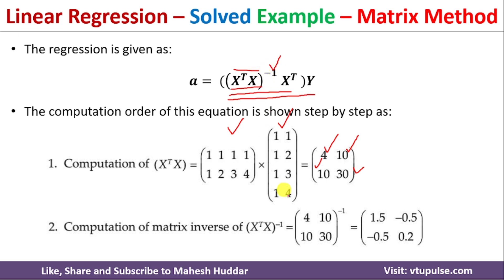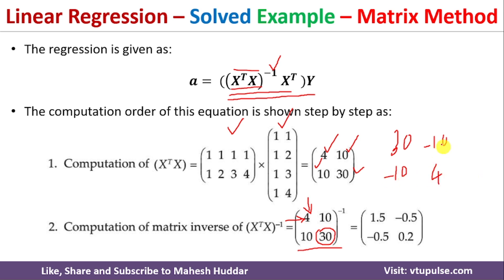Next we calculate the inverse of this matrix. To compute the inverse, we first calculate the cofactor matrix. For the first element, removing its row and column leaves 30. For the second element, removing its row and column leaves 10. With the plus-minus sign pattern, the cofactor matrix is [[30, -10], [-10, 4]]. The determinant is 4×30 − 10×10 = 120 − 100 = 20.